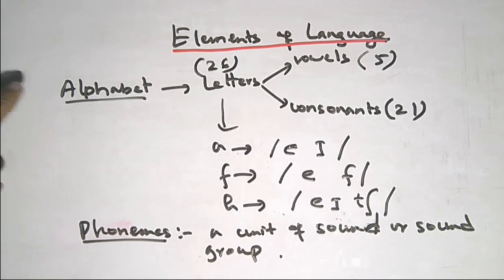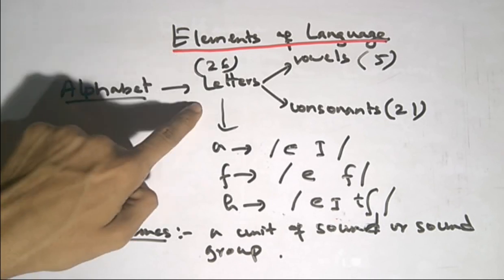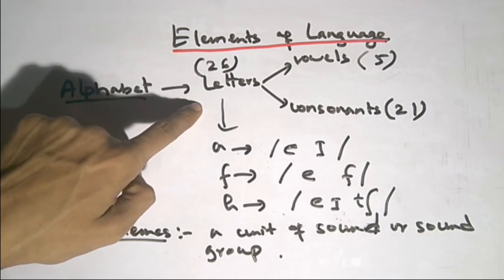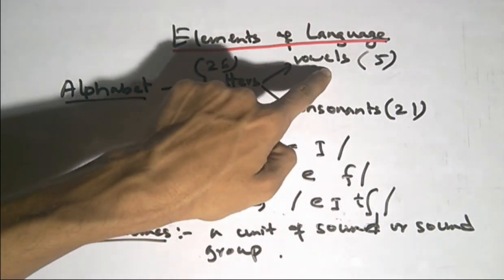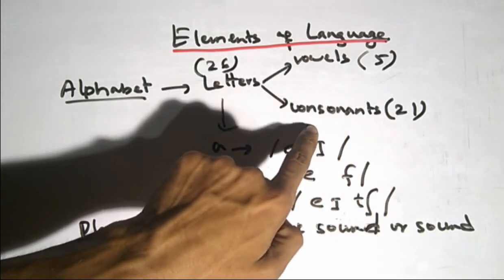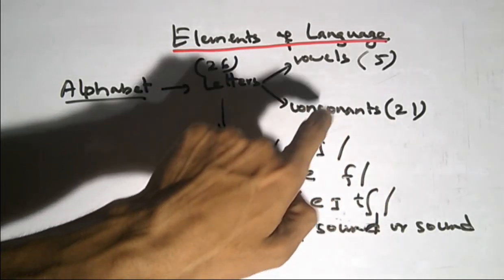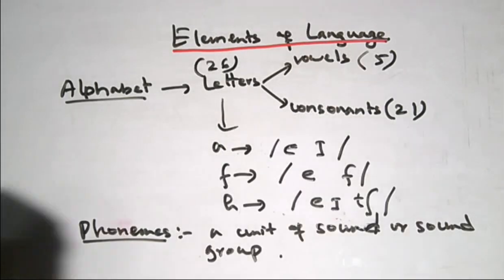Our English is based on the alphabet system. The alphabet system has 26 letters. It has 5 vowel letters and 21 consonant letters. These are the vowels, and these are the consonants.